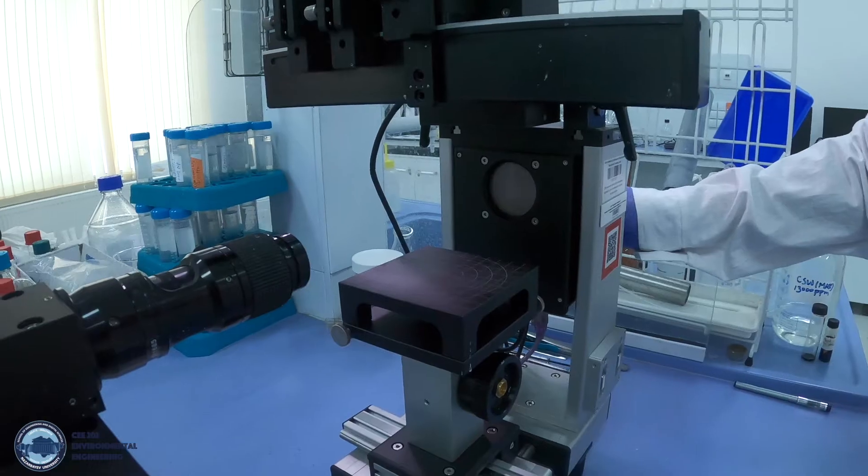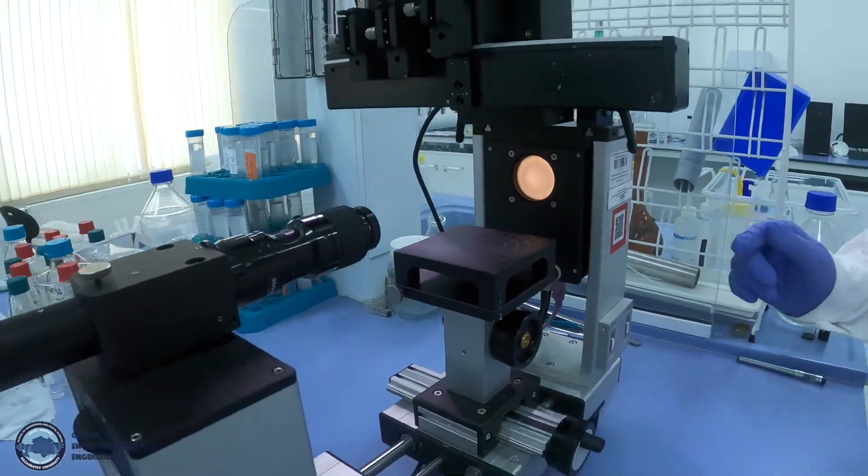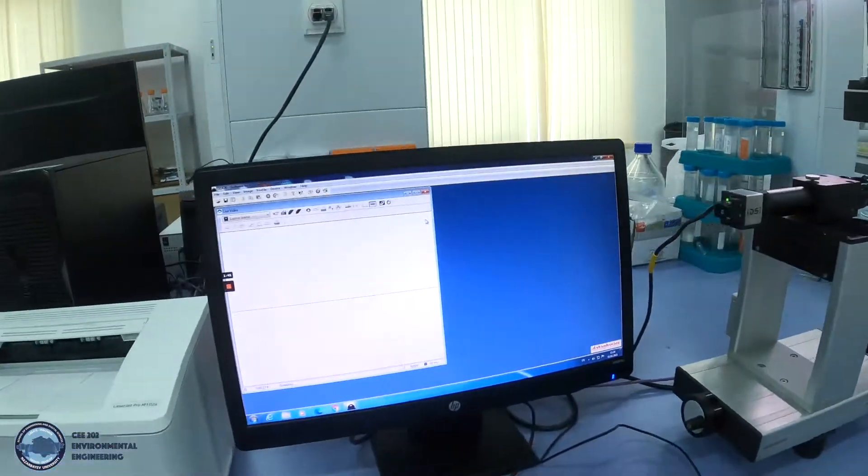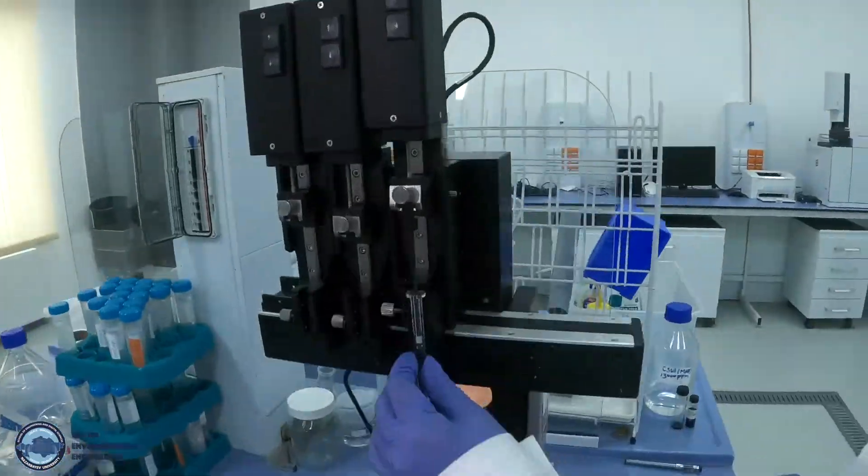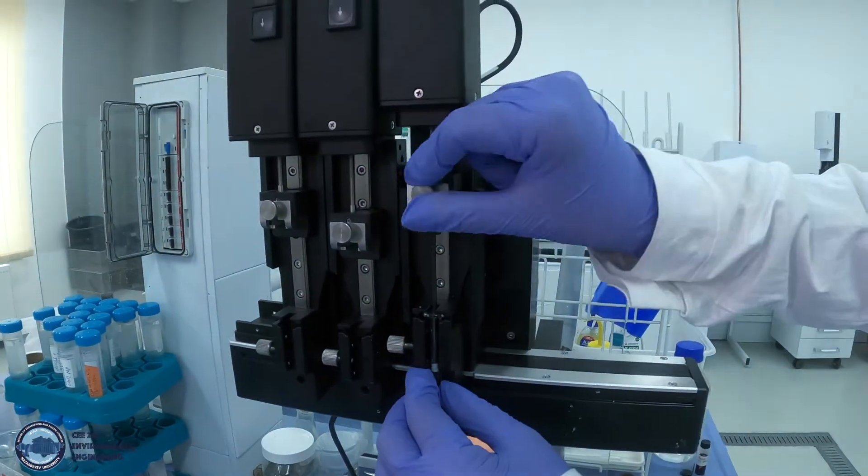Next, we will turn on the light on the device and take out the cap of the objective. Then we will install dosing syringe to the equipment.